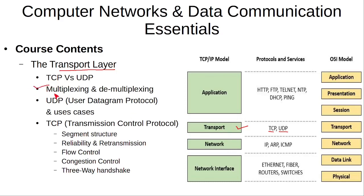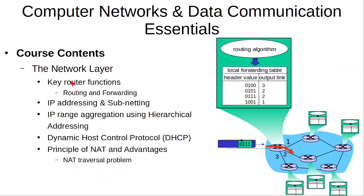We will discuss how multiplexing and demultiplexing is done at the transport layer, what the details of the UDP protocol are and in what scenarios it is used, what the frame structure of the TCP protocol is, and how TCP ensures reliability, flow control, and congestion control, as well as what the three-way handshake is in order to establish a TCP connection.